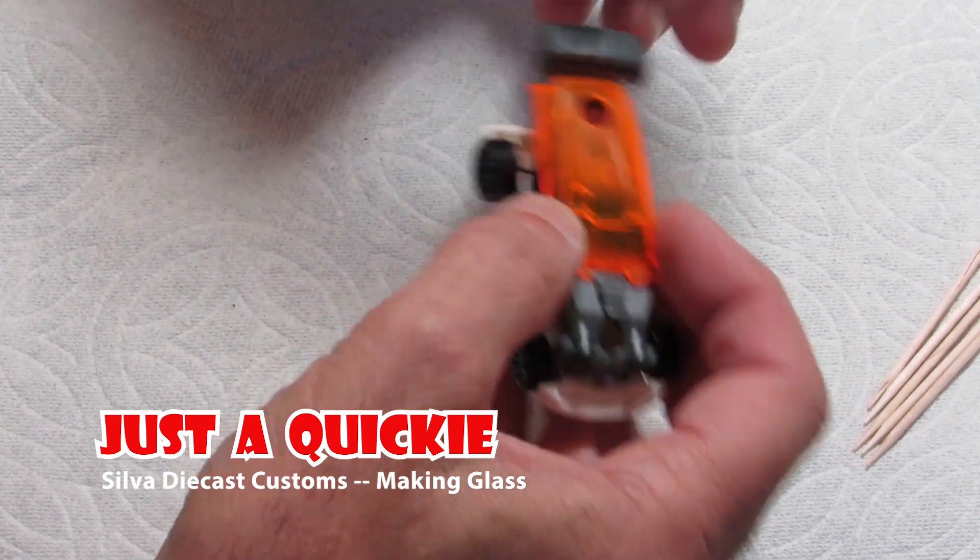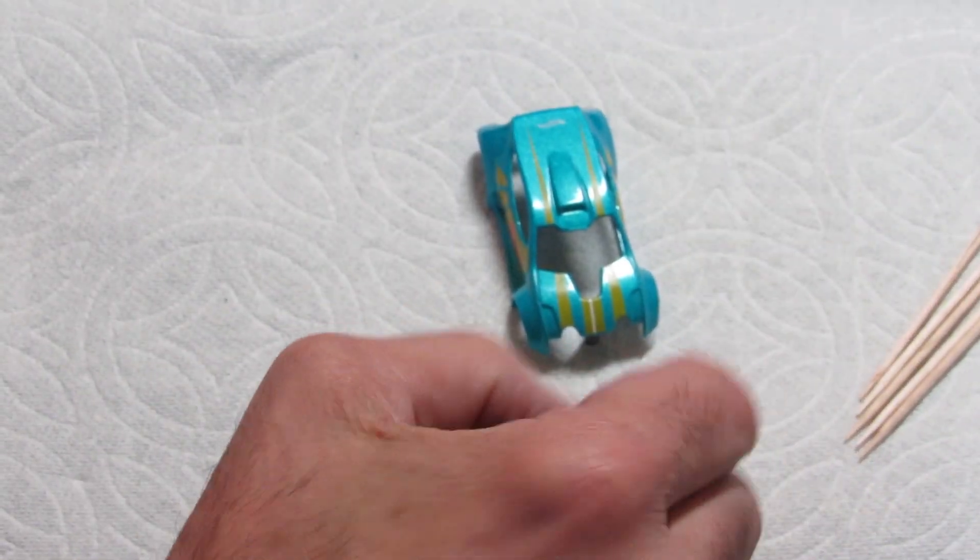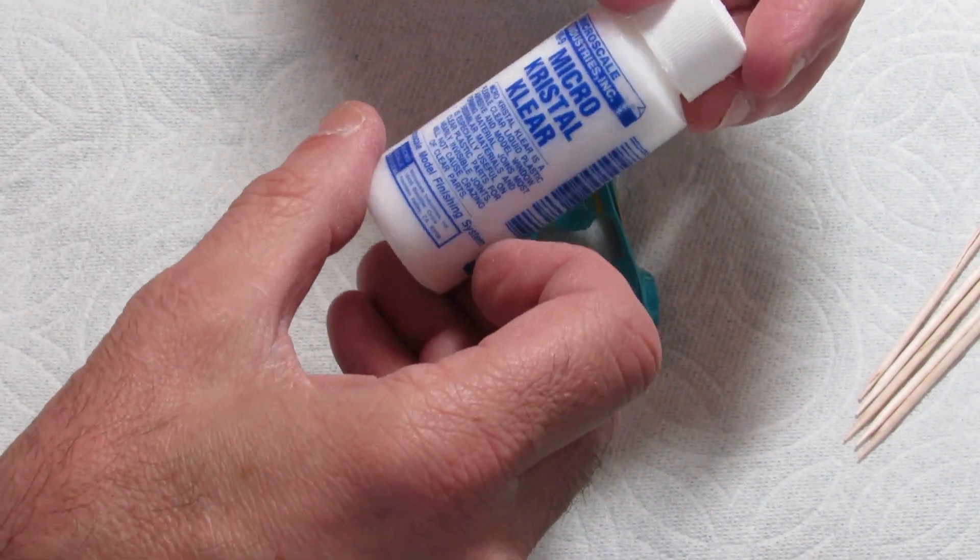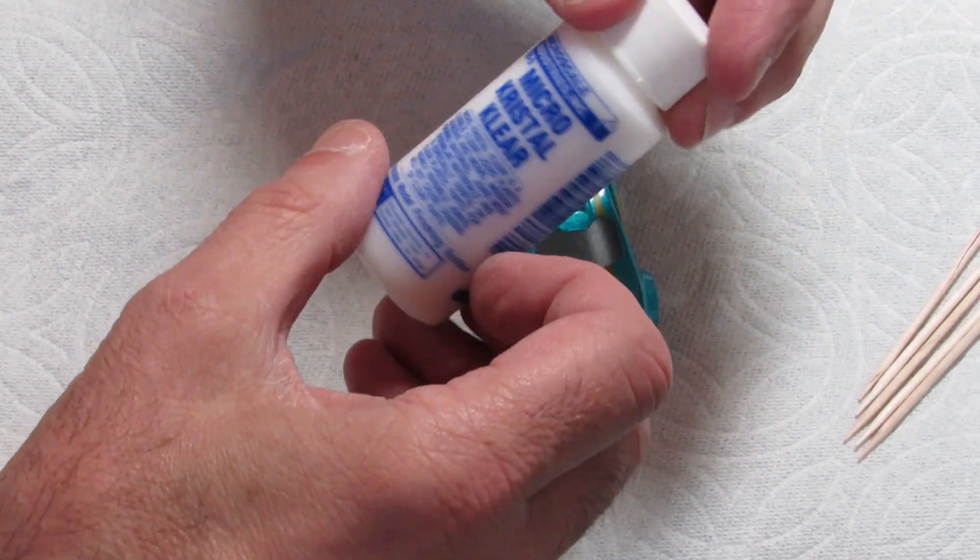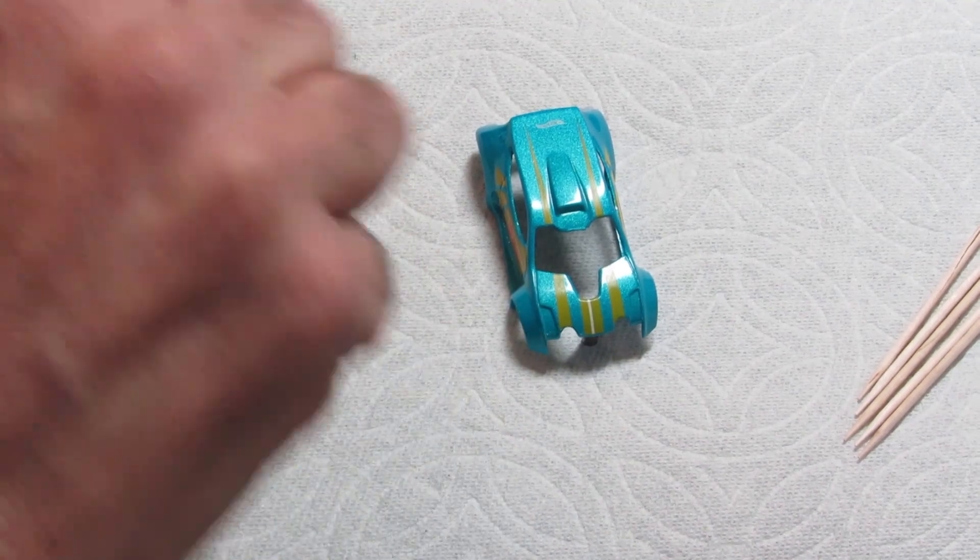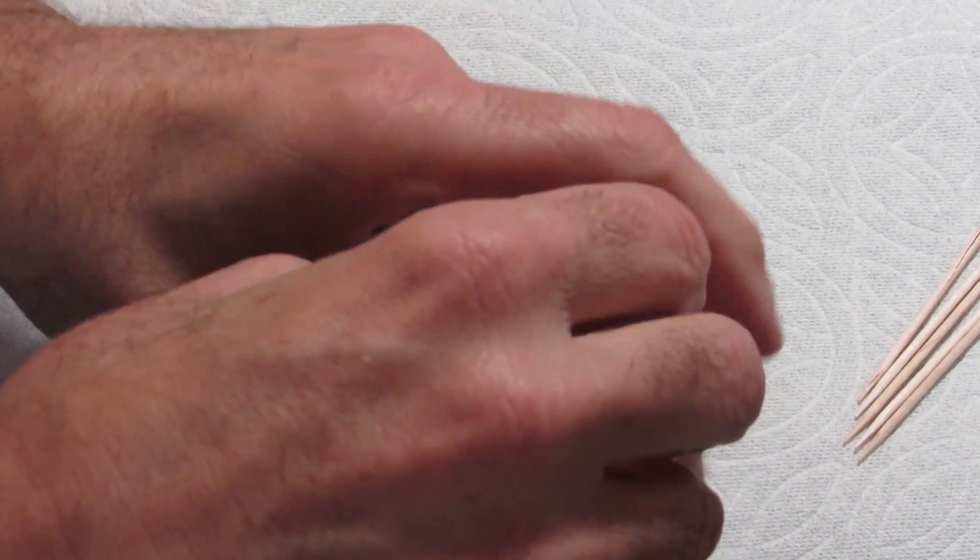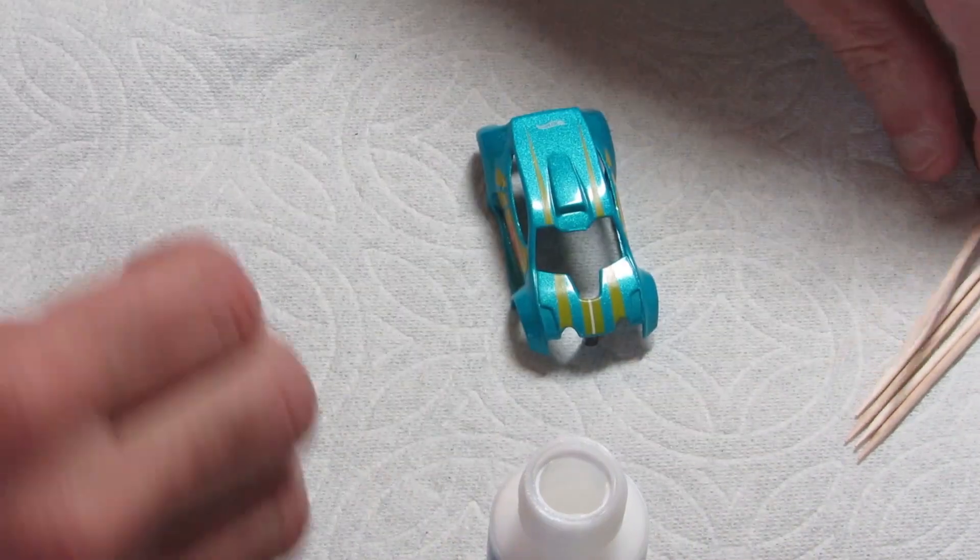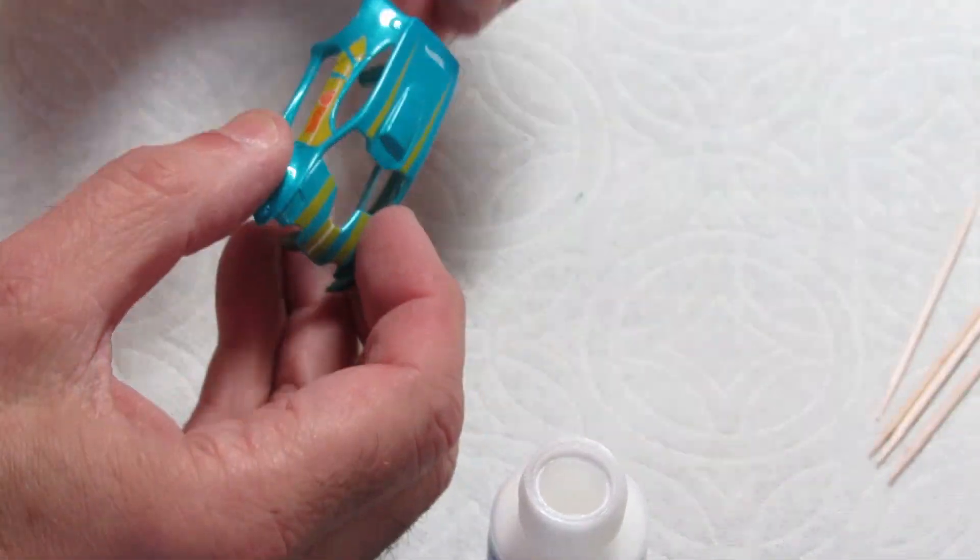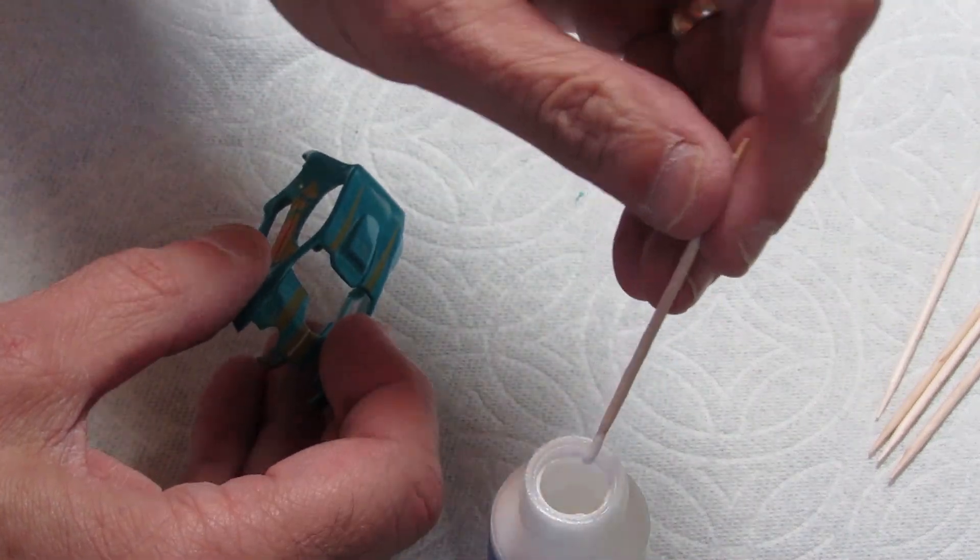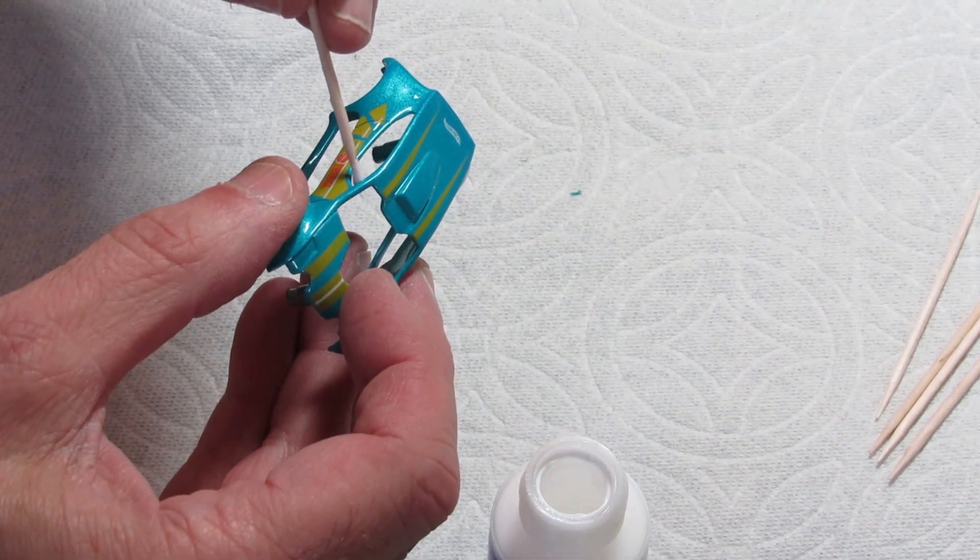I'm trying to make this quickly so you can see what was involved. There's the Micro Crystal Clear that I used. The bottle may not seem that big, but you use very little when you're doing this. I picked a car that had an ugly orange window, drilled it out, separated it.